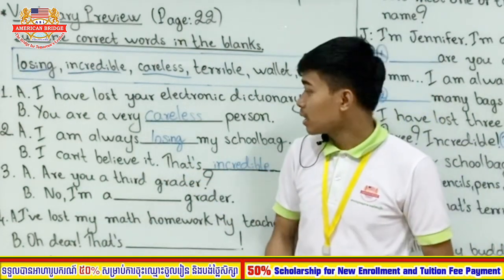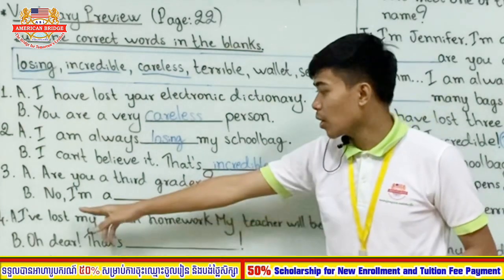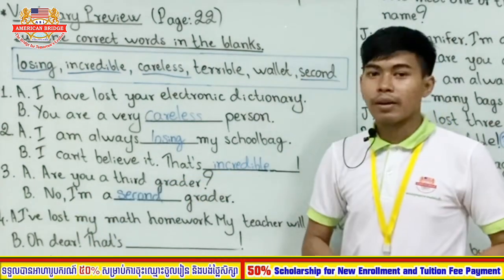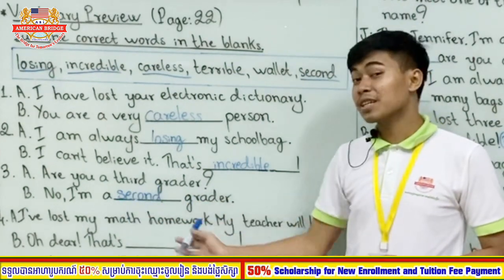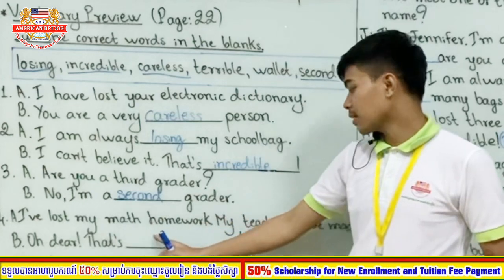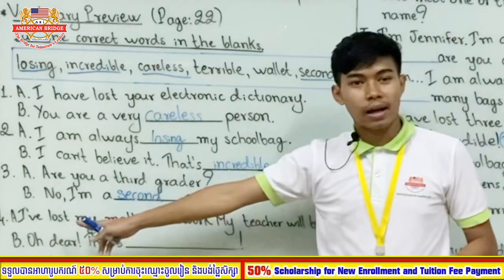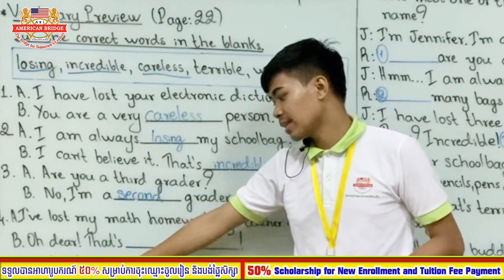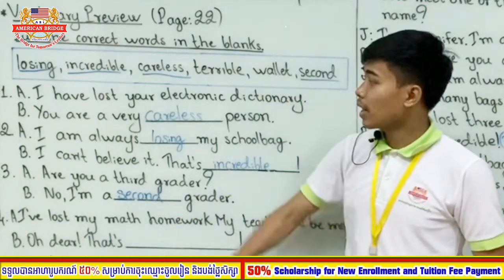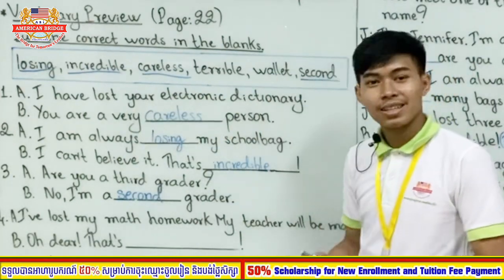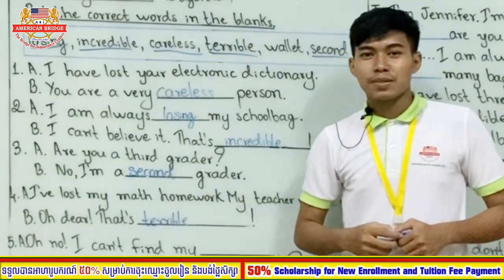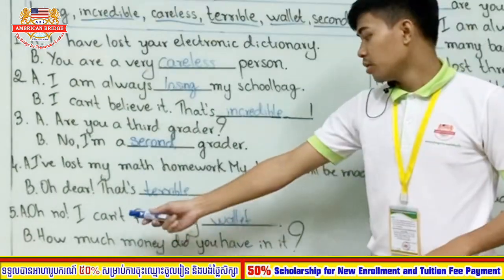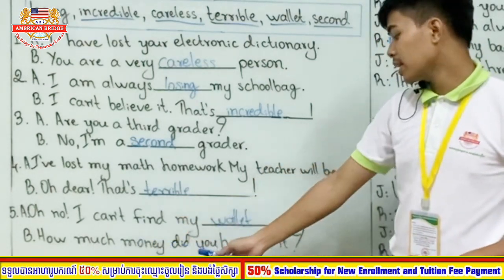Number three: 'Are you a third grader?' 'No, I'm a _____ grader.' The answer is 'second.' Number four: 'I've lost my math homework — my teacher will be _____.' B says 'Oh dear, that's _____.' The answer for the first blank is 'mad' (angry), and for the second blank is 'terrible' (very bad). Number five: 'Oh no, I can't find my wallet.' 'How much money did you have in it?'